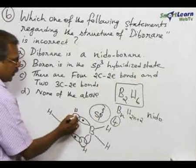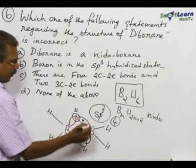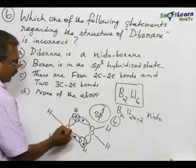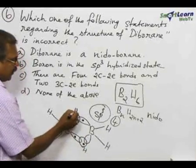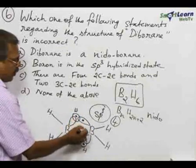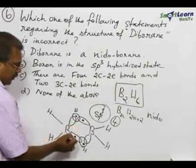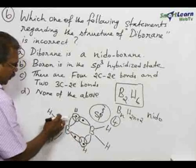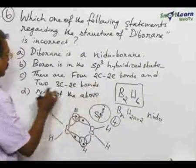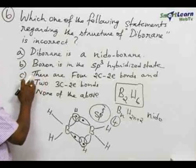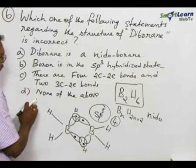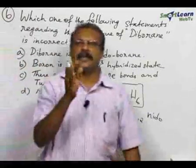Hydrogen gives one electron on each side, making three centers: boron one center, hydrogen another center, and boron the third center — a three-center two-electron bond. The remaining one, two, three, four bonds are two-center two-electron bonds. Statement C is also correct. Since all the statements are correct, none of the statements is incorrect. Therefore, select option D.